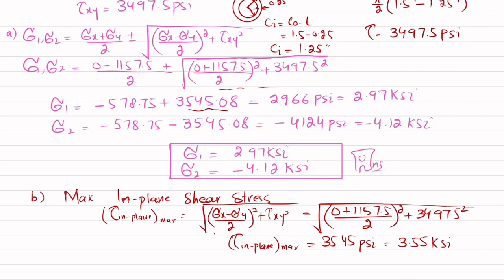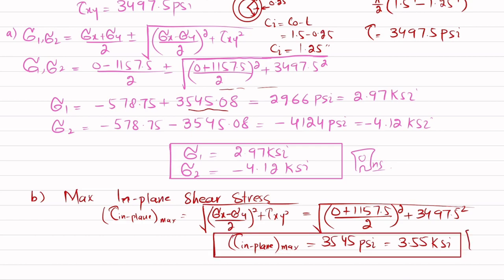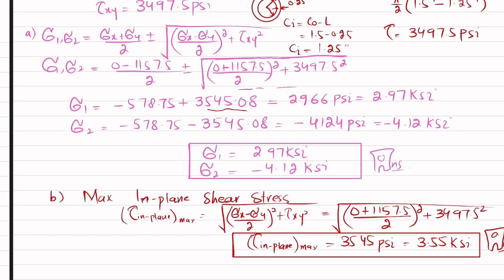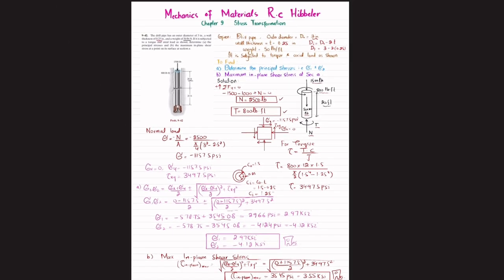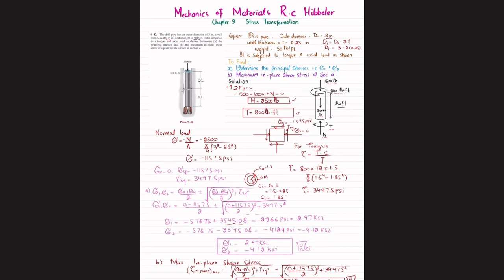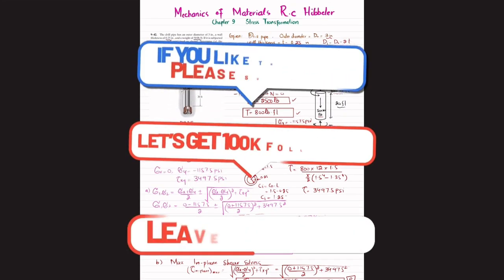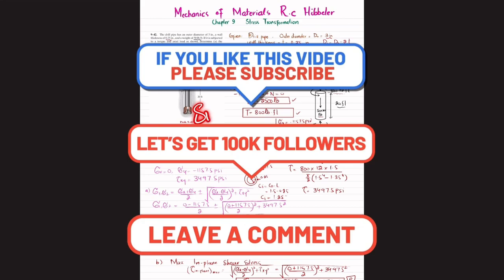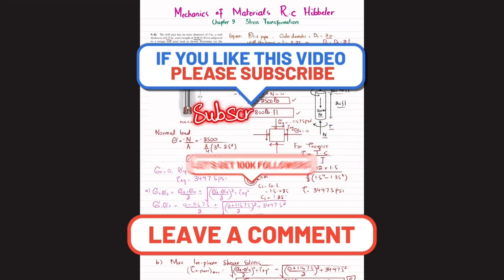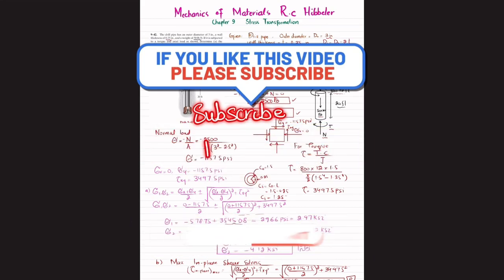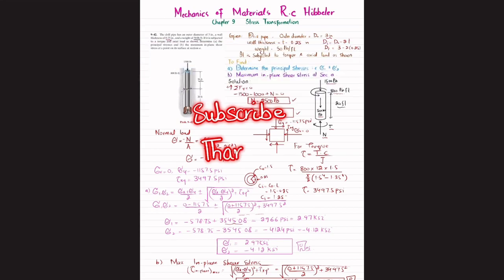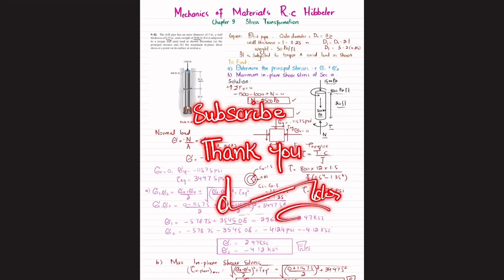And that is the answer to our second part: the maximum in-plane shear stress is 3.55 ksi. That was all about problem 9-42. I hope you enjoyed this video and learned from it. If you're new to my channel, please subscribe and press the bell icon for notifications. If you have any questions, ask in the comment section. Thank you for watching.